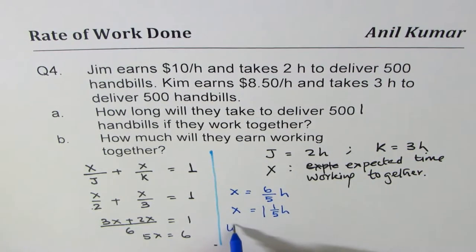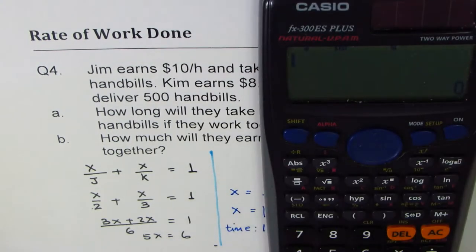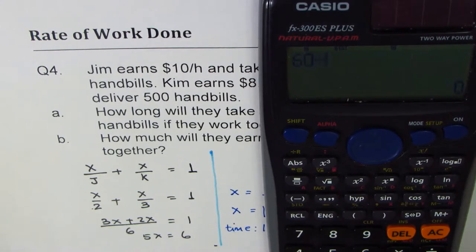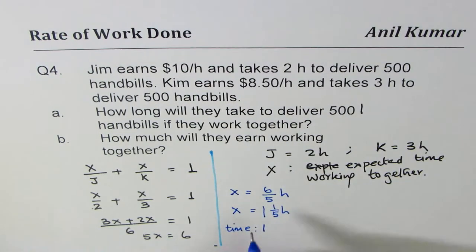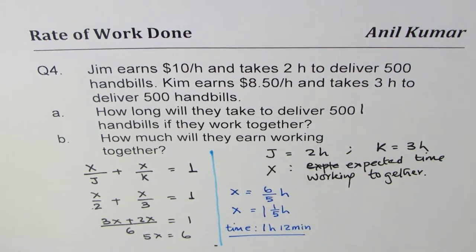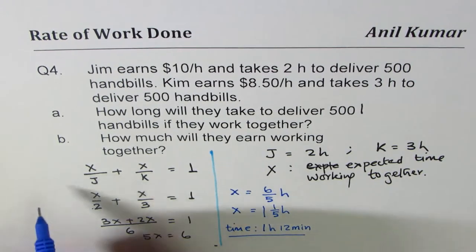So the answer will be time taken will be one hour, one fifth of 60. Let's do it. 60 divided by five, that is in minutes, 12 minutes. So it gives you one hour and 12 minutes. That's the total time they're going to take. So this is part A.